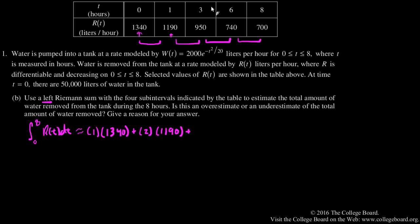The third interval, the width is 3, going from three to six, and the height gotten from the left side of that interval is 950. And the fourth interval is two units wide, going from six to eight, with a height from the left side of 740.